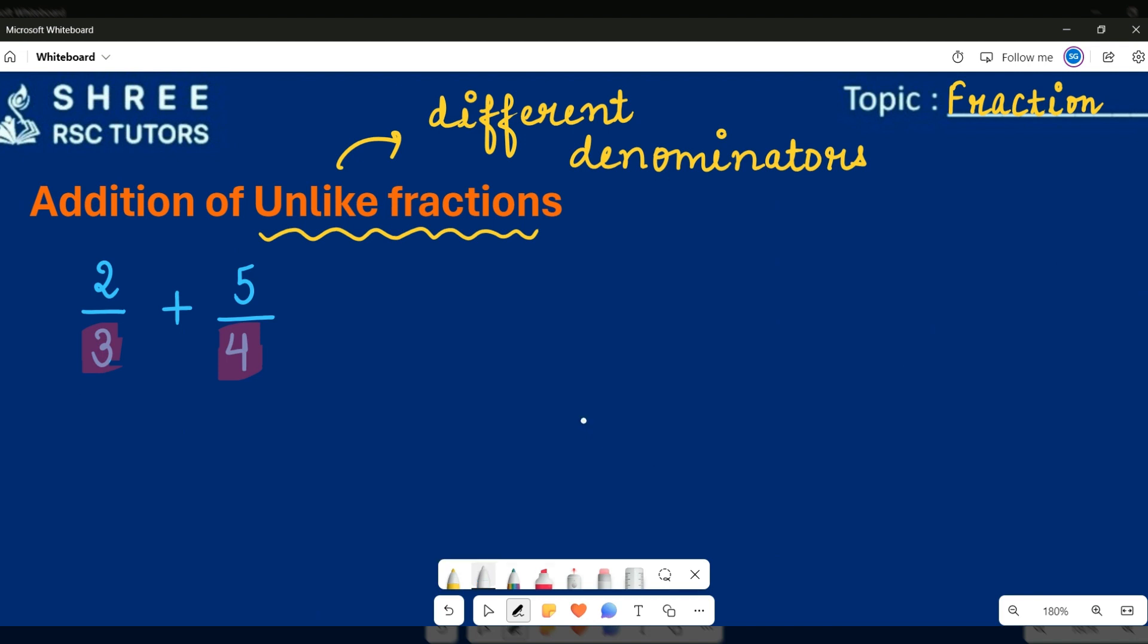Step number one is to take the LCM of the denominators. We all know that the LCM of three and four will be 12. So basically what we will do, we will write 12 at the place of denominators in both of the fractions because now 12 will be the denominator for both of them.